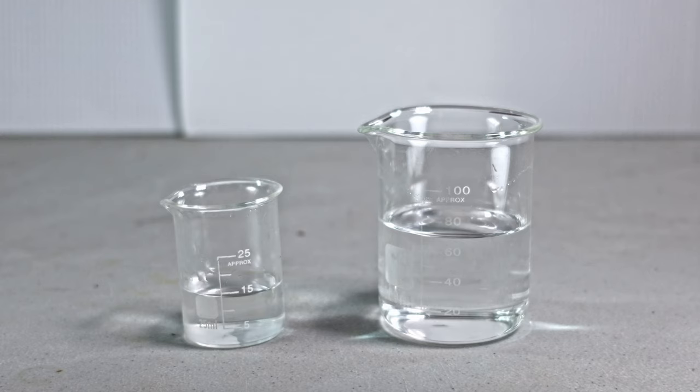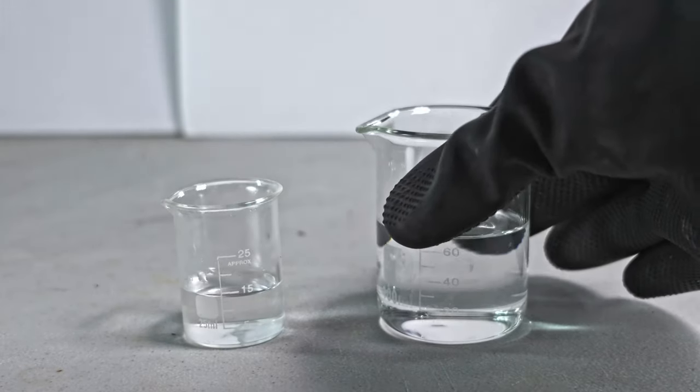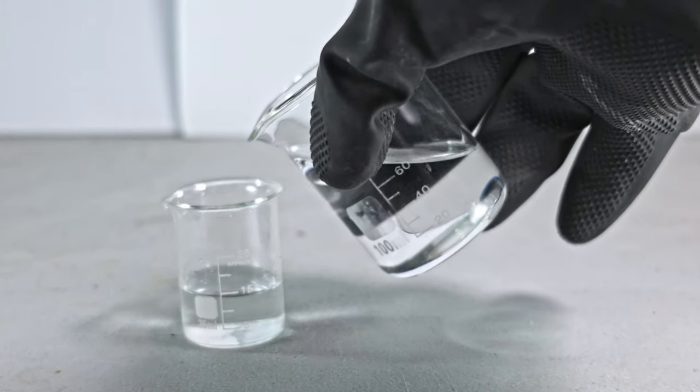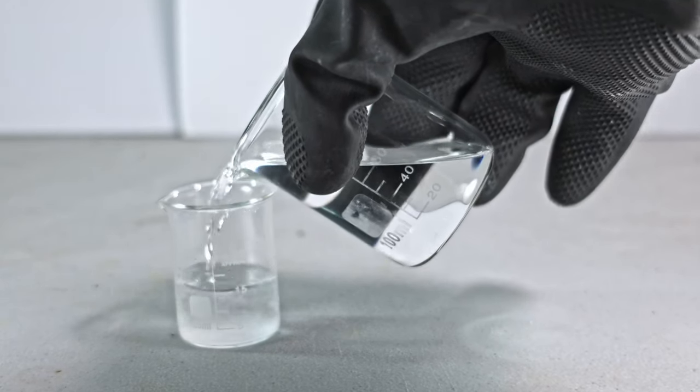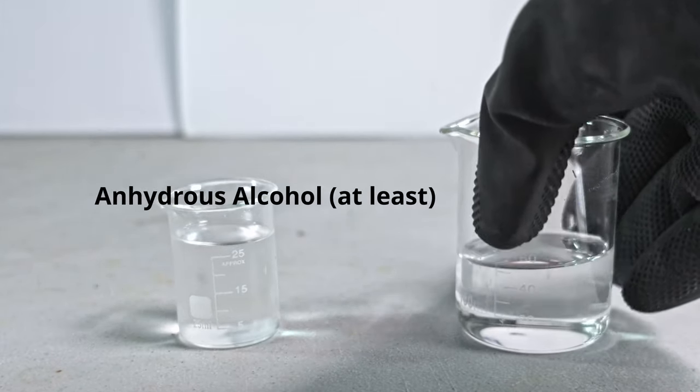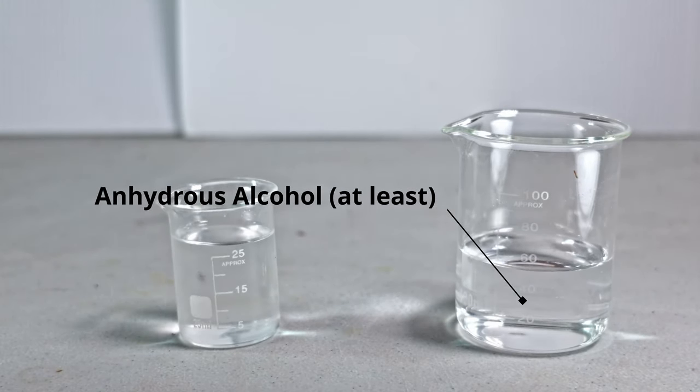To test if our distillate is ether or alcohol, we're going to pour it in a solution of water. If it is miscible, which means they both blend together, it is alcohol. If they form two separate mixtures, then it is ether. As you can clearly tell, we have one solution. That means we produced alcohol and not ether.